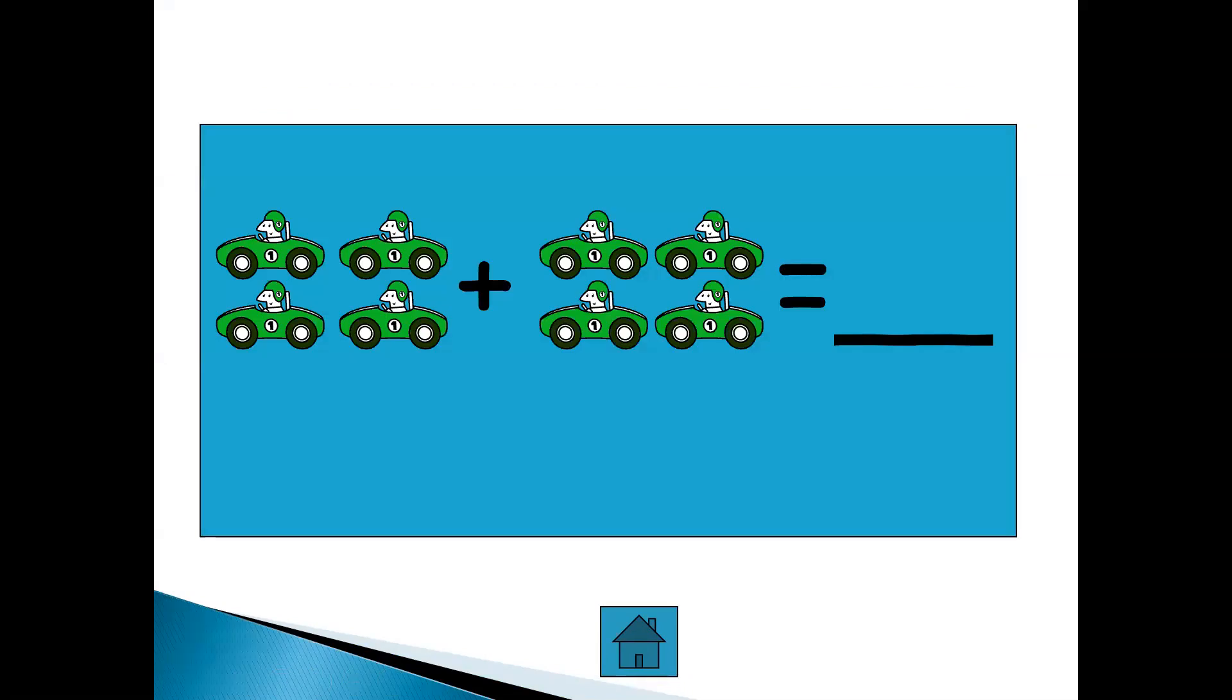Next one is for 200. Can you read the problem to me? What would this be? Good. There's four over here. Good. That's a plus sign. There's four over here. How many all together? Good. Can you tell me the sentence? What would this be? Four. Good. Plus 4. What's this guy? Good. Equals 8. Nice job. 200 points.